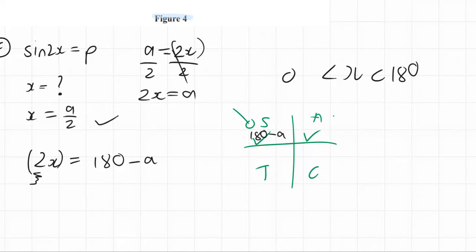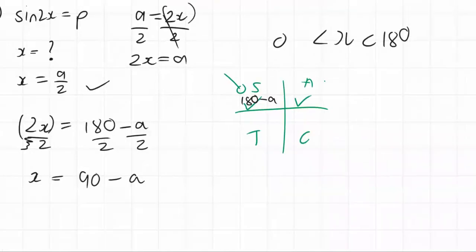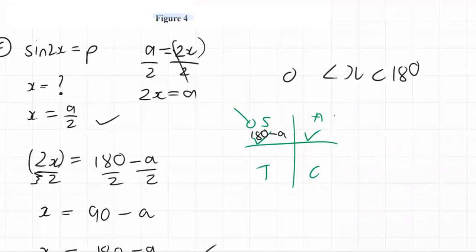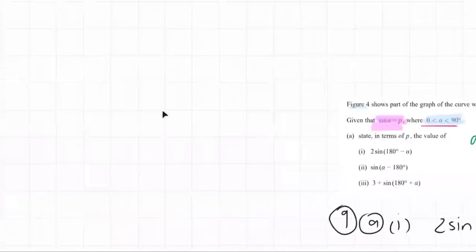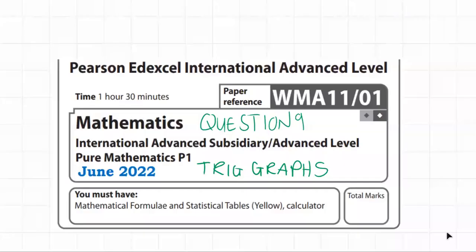So we divide all three by two and we get x equal to 90 minus a. We can also just leave it in the form 180 minus a over 2. Right, that completes number nine. It was trig graphs. Fantastic. Lots going on.